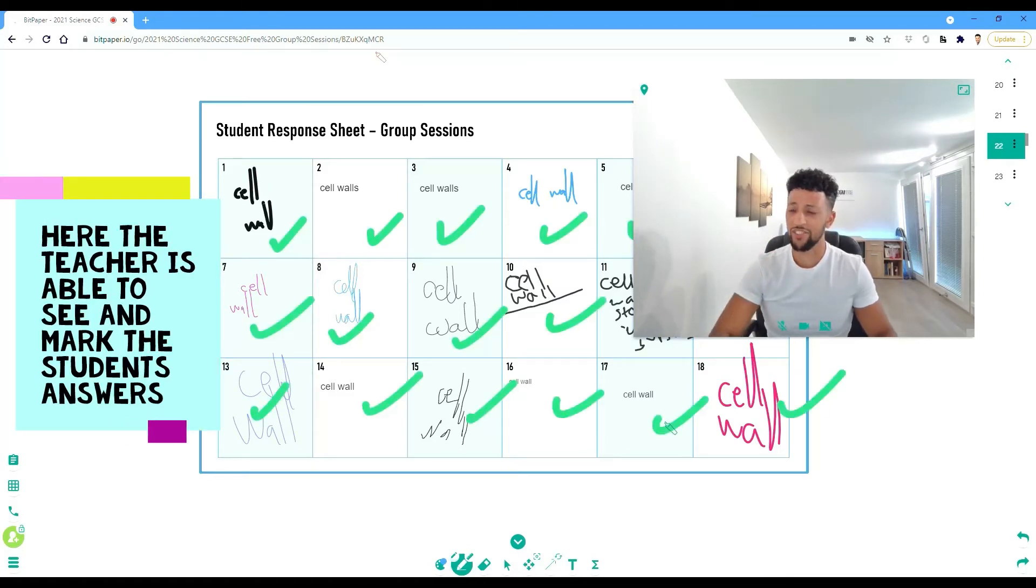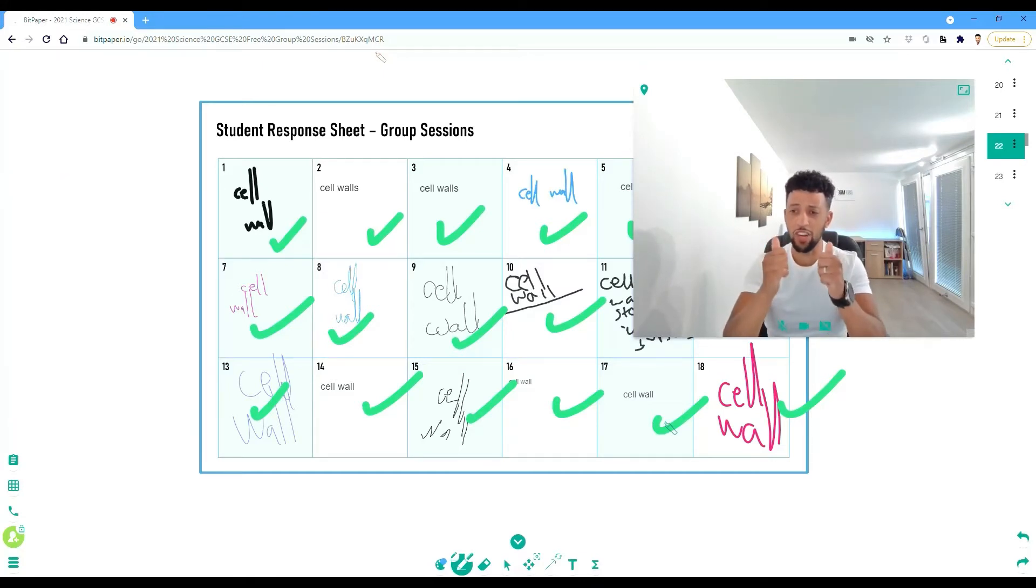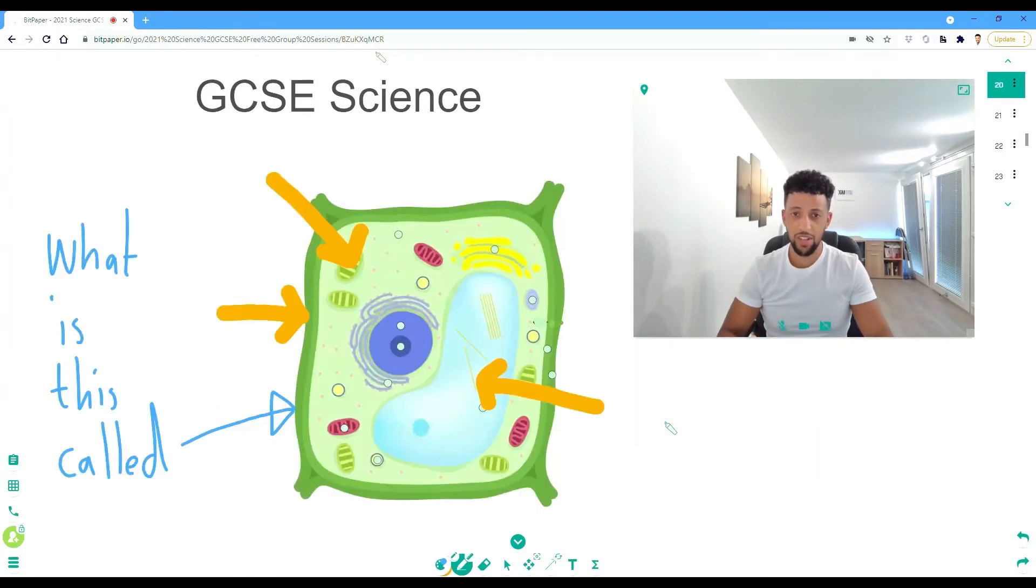Beautiful, fantastic. Everyone got the correct answer. Well done. Of course, the outer part of the plant cell is called the cell wall, which is not found in animal cells. Good job.